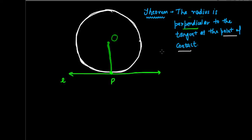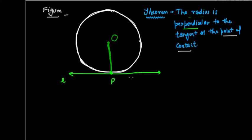Let us see how we have to prove that. First, we need to take a diagram. In this figure, you can see we have taken a circle with center O, and we have taken L as a tangent which touches the circle at point P, which is the point of contact.